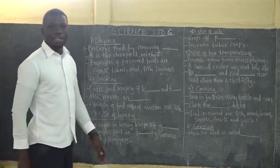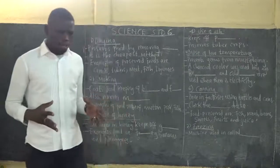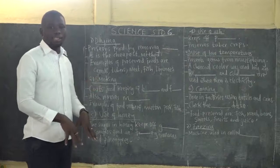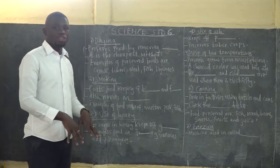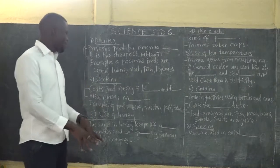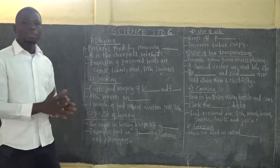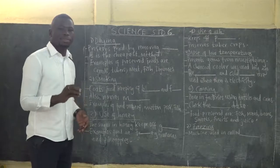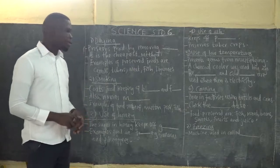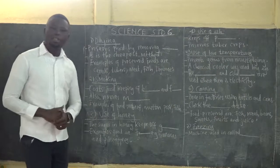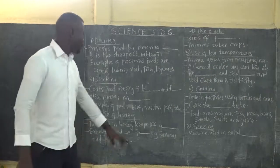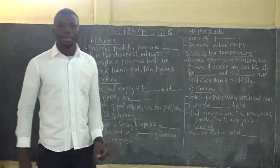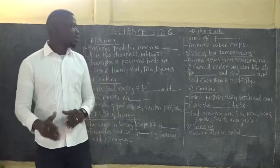Next, the use of honey. How does honey preserve food? Food is dipped into honey — this was done long ago, so it is a traditional method. The honey keeps off germs that cause the food to go bad. Examples of foods preserved by honey were mostly fruits, such as bananas and pineapples.